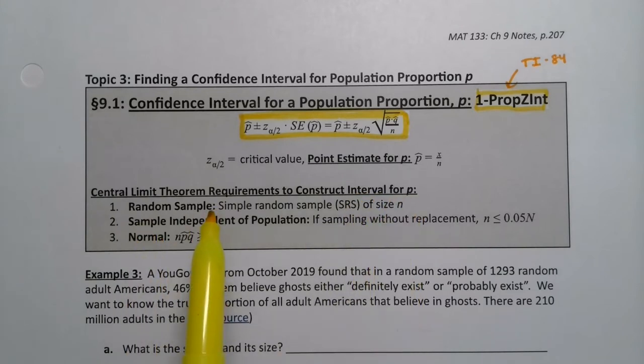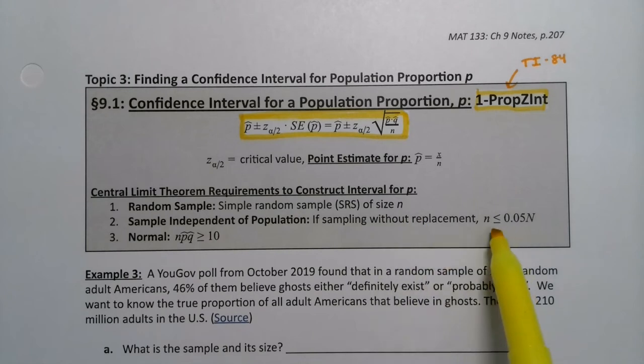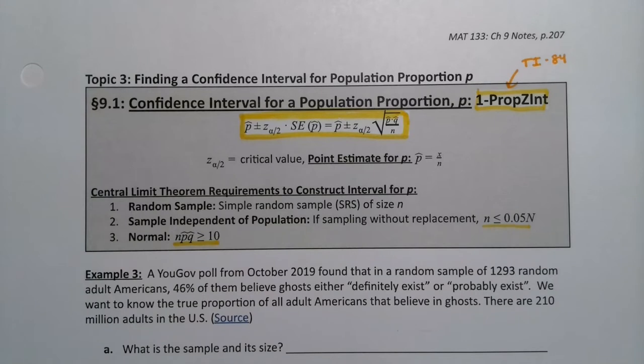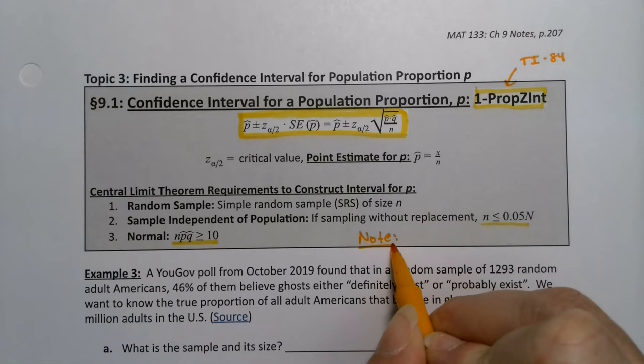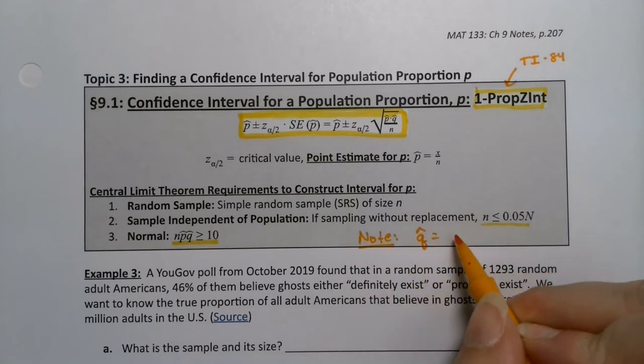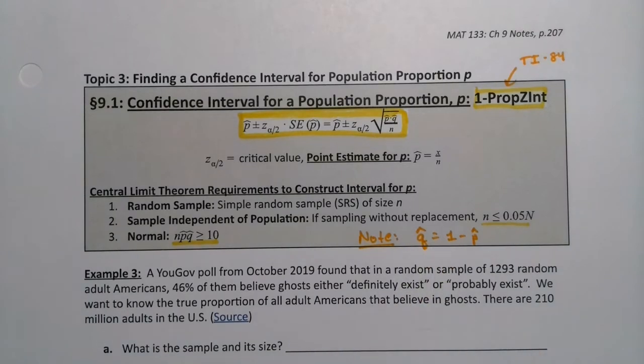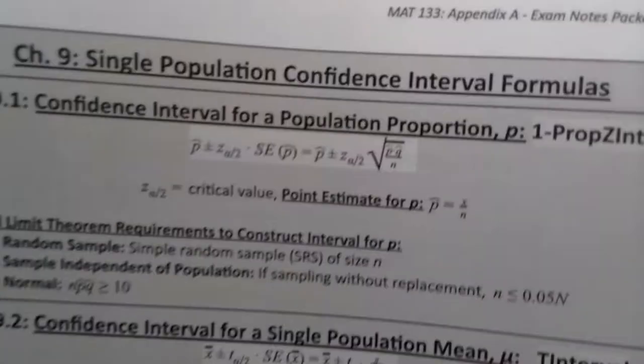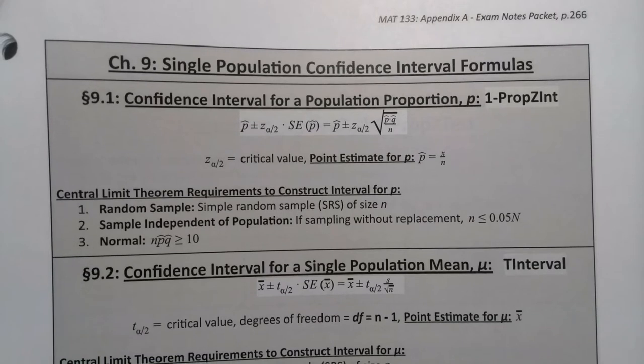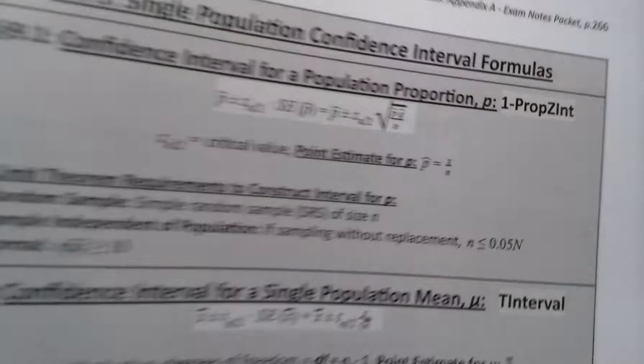We have to have a random sample, because otherwise we have bias. We have to have a sample that's independent of the population. If you're sampling with replacement, it's automatically independent, but that's pretty rare. Usually we're sampling without replacement, and so we would need N to be less than 0.05 capital N. You want a small enough sample that nobody knows you took it, but you want it to be big enough that N times P hat times Q hat is greater than or equal to 10. This entire box is written for you right here on your exam notes packet.